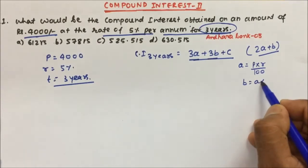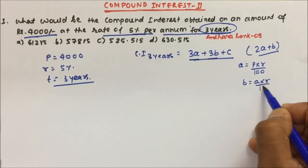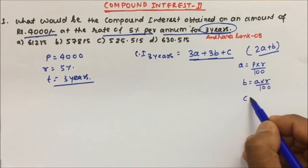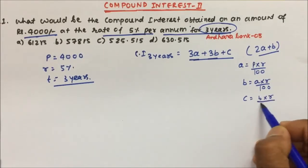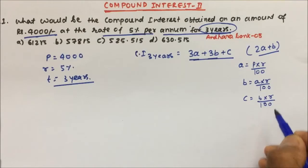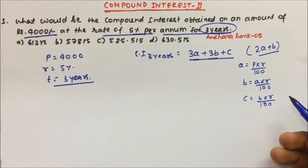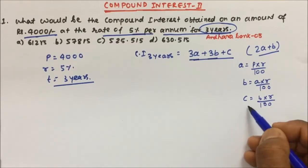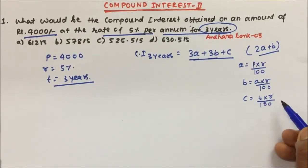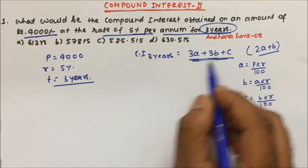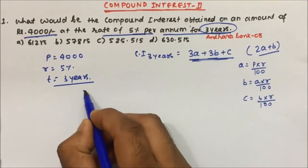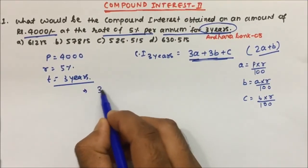b is equal to a into r by 100, and c is equal to b into r by 100. If somebody asks what is d — for 4 years or 5 years — then d is equal to c into r by 100. Now let's use the formula and simplify this question.